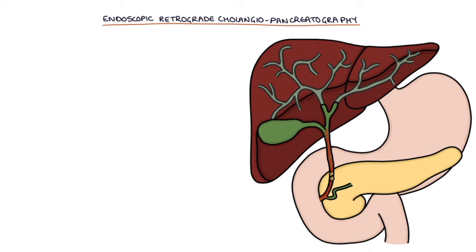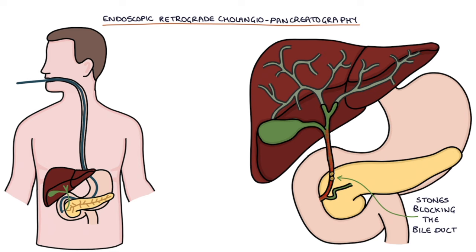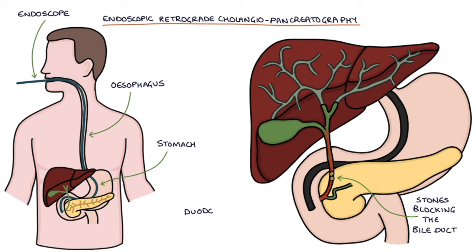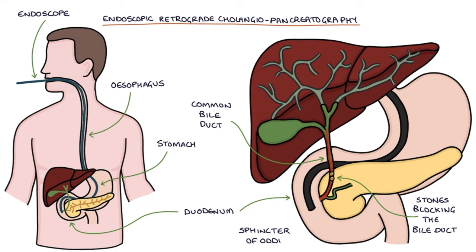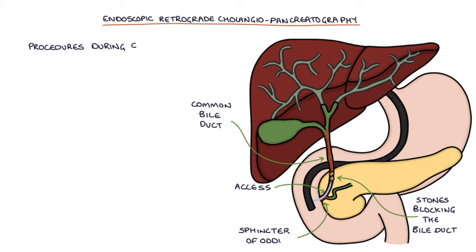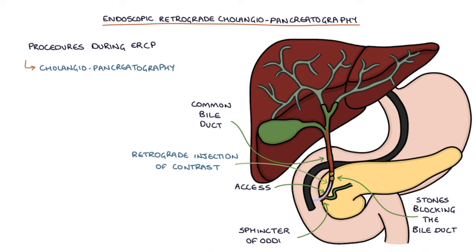An endoscopic retrograde cholangiopancreatography or ERCP procedure is required to remove stones that are blocking the bile duct. This involves inserting an endoscope down the esophagus, past the stomach, to the duodenum, and then to the opening of the common bile duct, which is called the sphincter of Oddi. This gives the operator access to the biliary system. Cholangiopancreatography involves a retrograde injection of contrast into the duct through the sphincter of Oddi and then taking images to visualize the biliary system, giving an outline of any stones and where there are problems in the biliary system.